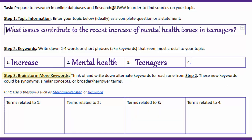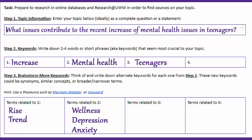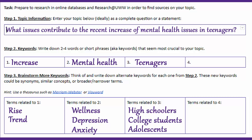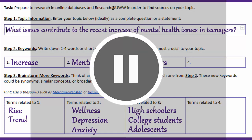Under Step 3, we want to brainstorm more keywords, because not everybody uses the same words when talking about your question. Some might be synonyms — for "increase," "rise" is a good synonym, or "trend" is a related word. Some might be broader words — for "mental health," I might say "wellness." Or more specific words, like "depression" or "anxiety." For "teenagers," I might be more specific and look at "high schoolers" or "college students," or more generally, "adolescents." Some words don't really have alternate words, and that's okay, but it's worth thinking about. Pause this video and try to brainstorm more words — use a thesaurus as linked in the Graphic Organizer if you need ideas.